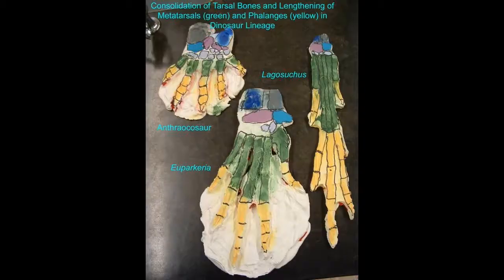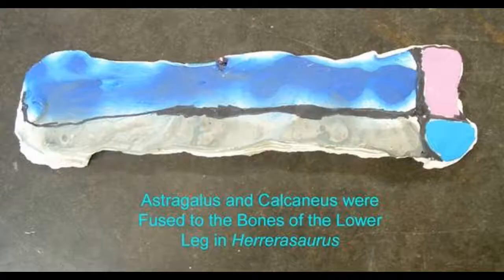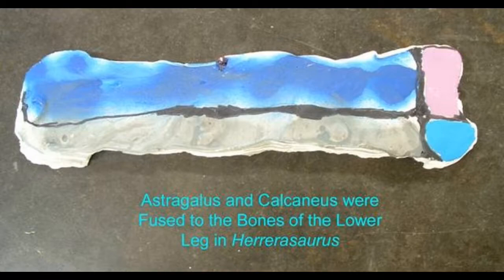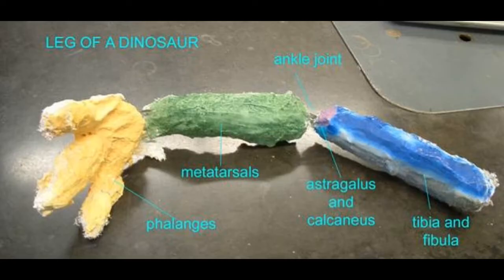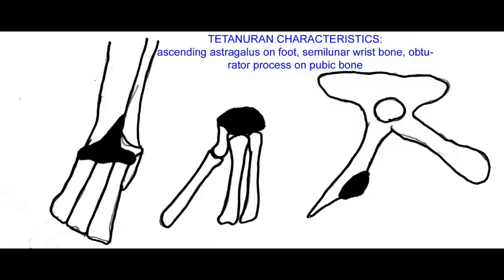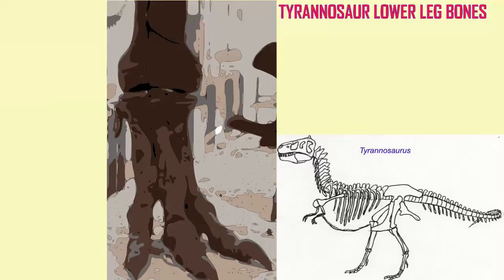And so, therefore, in the first dinosaurs, these two tarsal bones were attached to the bones of the lower leg. In fact, their structure is important. For example, one would use the ascending process of the astragalus as a defining feature of a group of theropod dinosaurs, the tetanorans.